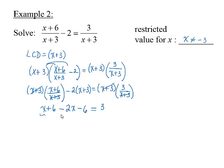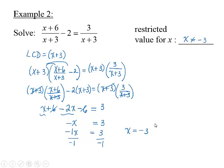Combining like terms gives us negative x equals 3. Since negative x is negative 1 times x, we divide each side by negative 1 to get x equals negative 3. However, negative 3 is a restriction on the variable — it will cause division by zero in the original equation. Since our only possible solution is not valid, we must exclude that value from the solution set, leaving us no solution, or the empty set.